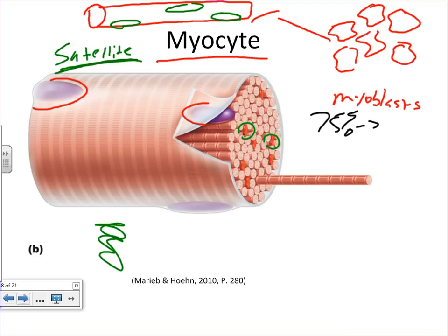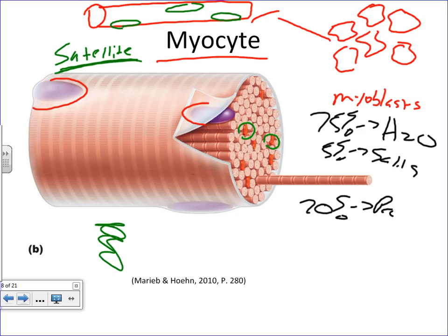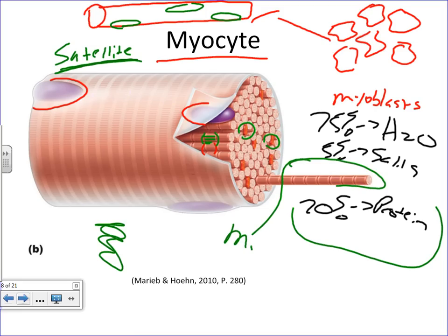Muscle cells have organelles like mitochondria and endoplasmic reticulum, but they have a lot of protein within them. About 75% of the composition of a skeletal muscle cell is water, about 5% is inorganic salts, and the remaining 20% is protein. The proteins in muscle cells are the contractile units. The light and dark alternating bands you see are the contractile proteins arranged in an organized fashion that allow for movement to take place when they contract. We organize these proteins in what we call the myofibrils.